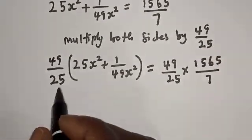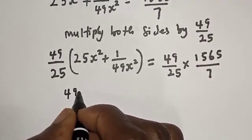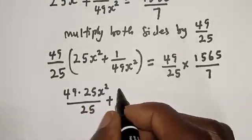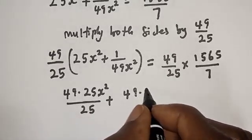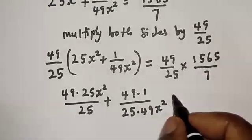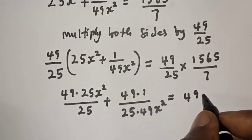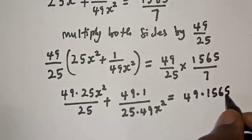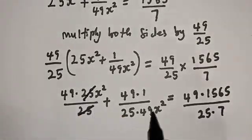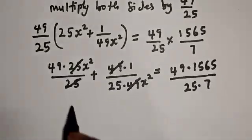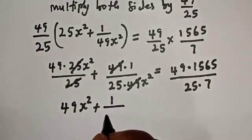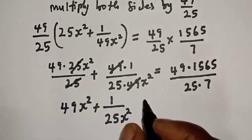Opening the bracket, we have 49 multiplied by 25s squared over 25 plus 49 multiplied by 1 over 25 multiplied by 49s squared. This simplifies so that 49s squared plus 1 over 25s squared equals 49 multiplied by 1565 over 25 multiplied by 7. Then the common factors cancel out.